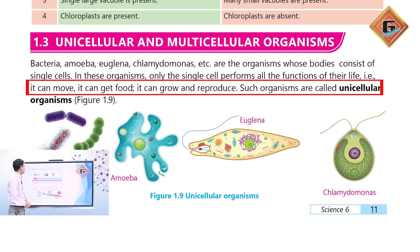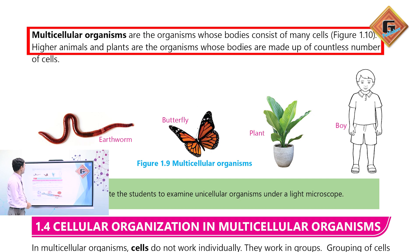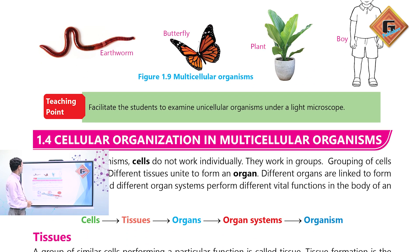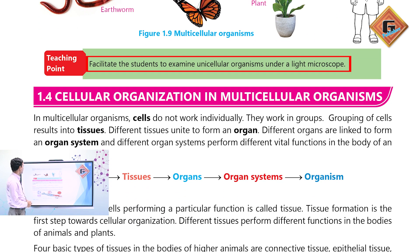Multicellular organisms are organisms whose bodies consist of many cells. Higher animals and plants are organisms whose bodies are made up of countless numbers of cells. A teaching point is to facilitate students to examine unicellular organisms under a light microscope.